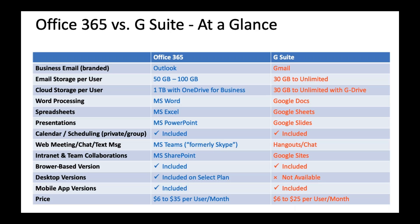Google has a word processor called Docs; Microsoft has Microsoft Word. Then you have PowerPoint for presentations and Excel versus Google Sheets. I just want to highlight these — if you have specific questions I can go into more detail. The major components you use every day are the Microsoft Suite. We'll go into more detail on Microsoft Teams and OneDrive in the next presentation. If you guys have any questions, let me know.